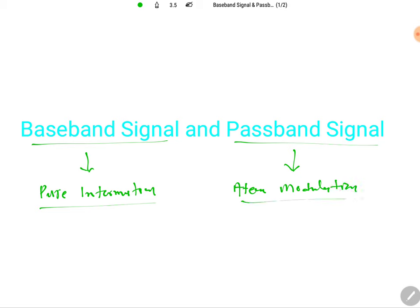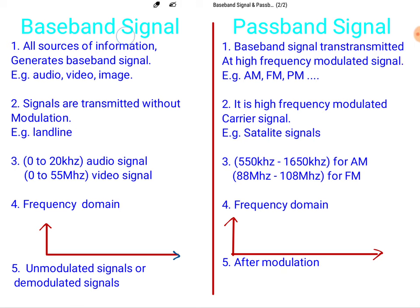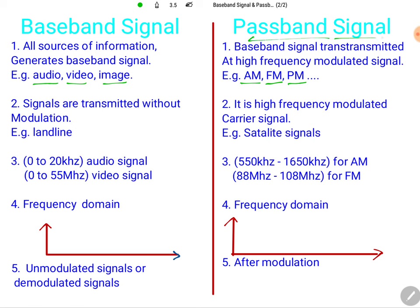This is the basic distinction between baseband and passband signal. When we talk about baseband signal, all sources of information generate baseband signals — those could be audio signals, video signals, or images. Passband signal is transmitted through a high carrier frequency with modulation, such as amplitude modulation, frequency modulation, phase modulation, or other modulation techniques.